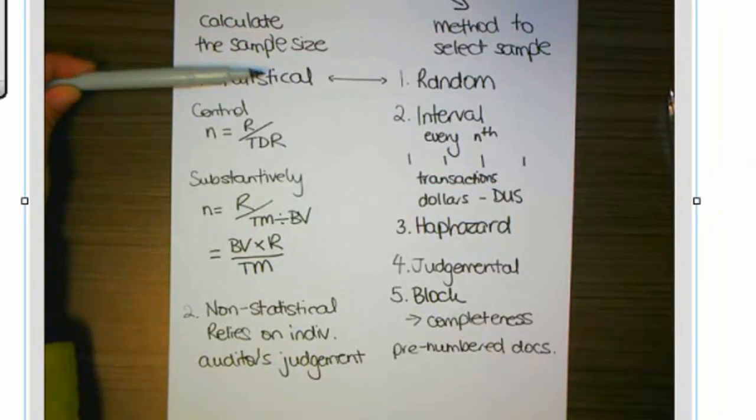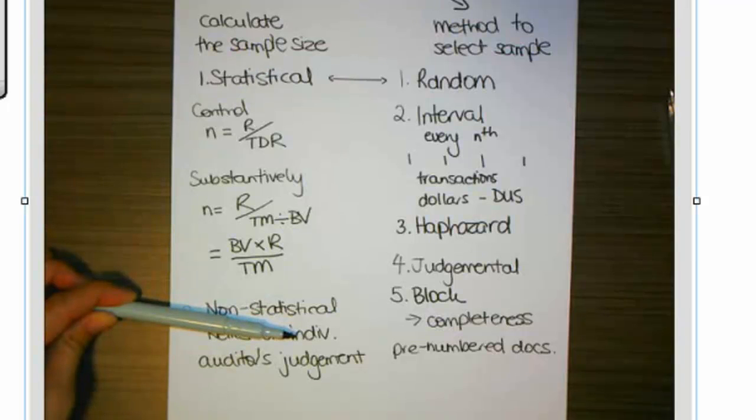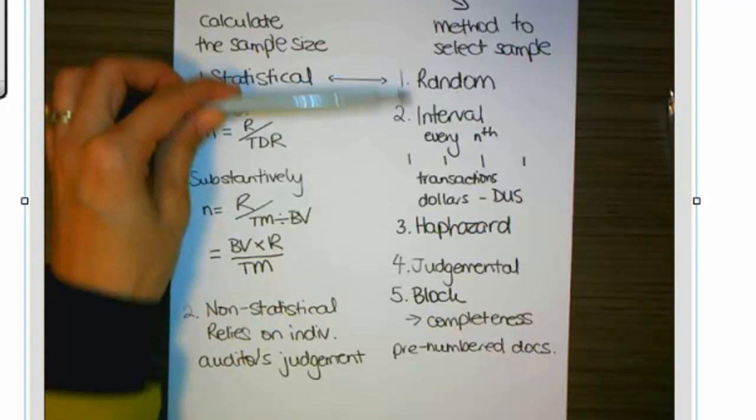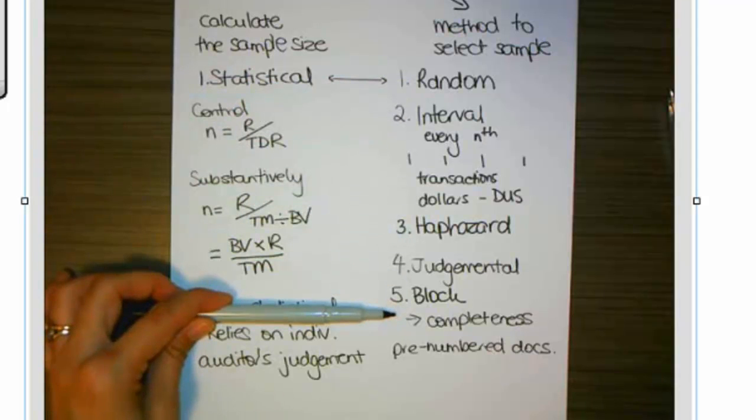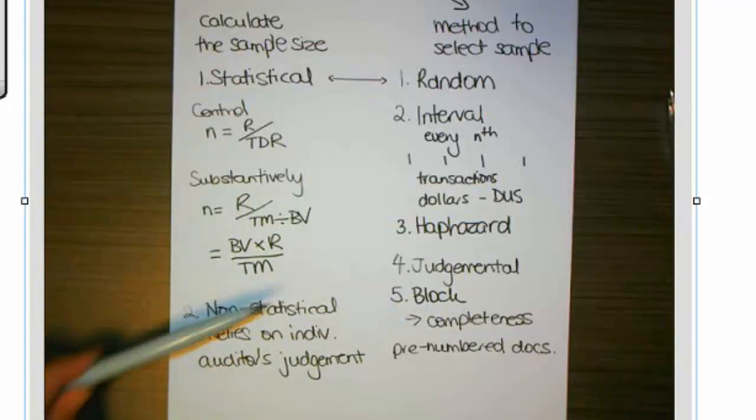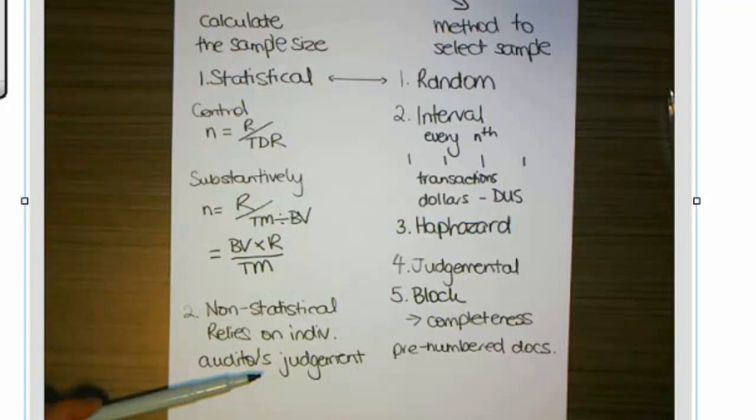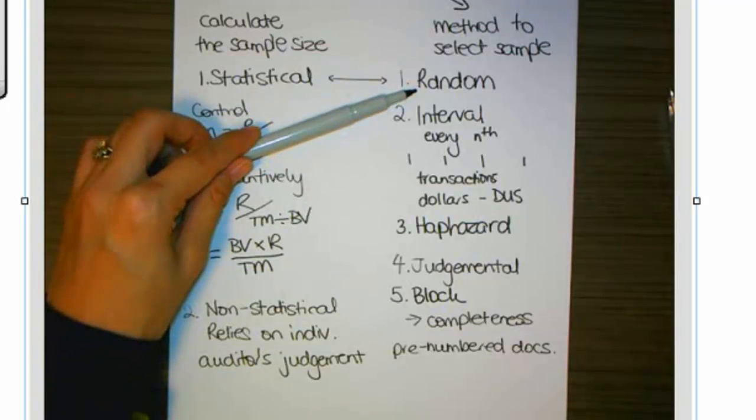So in terms of sampling, we can have statistical or non-statistical to come up with our sample size, and then I can use any one of the five options to select my sample. So I might use non-statistical sampling to come up with an idea of 50 transactions to sample, but then use random selection to select that sample, or interval, or haphazard.